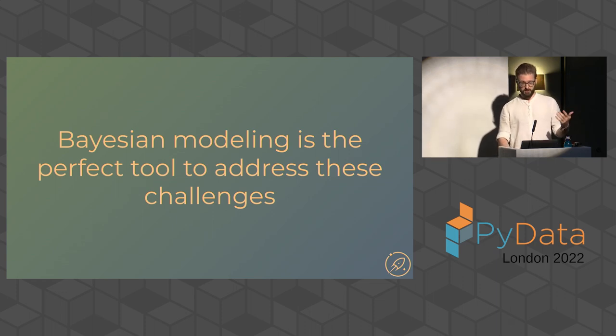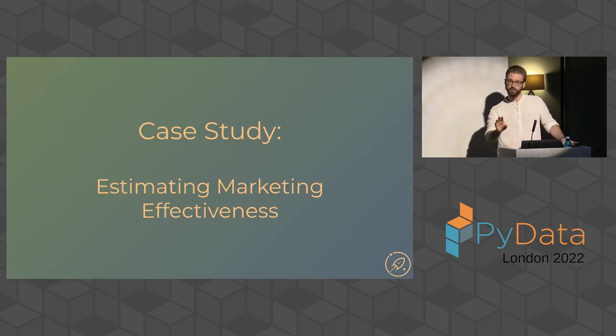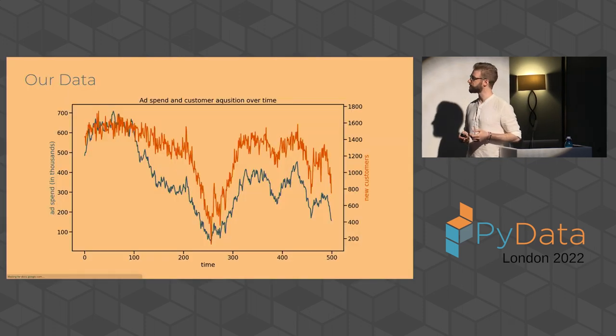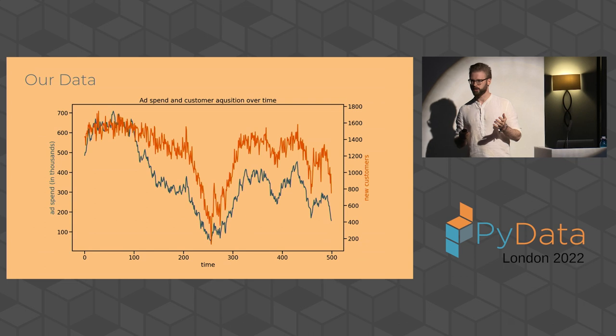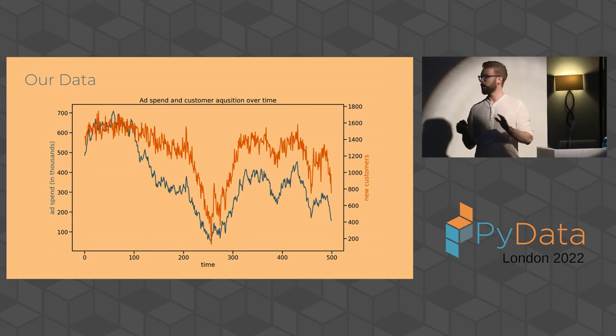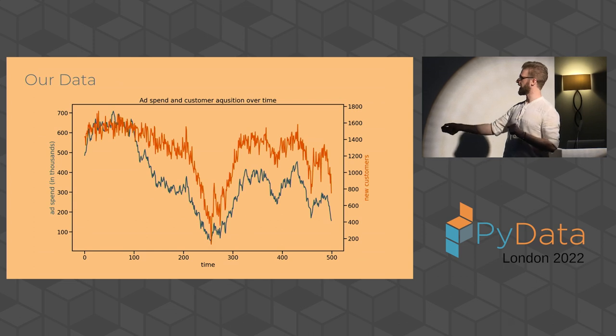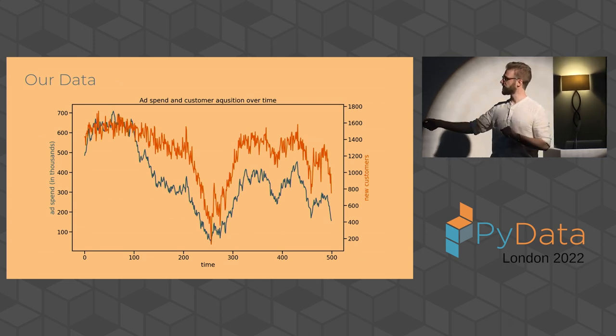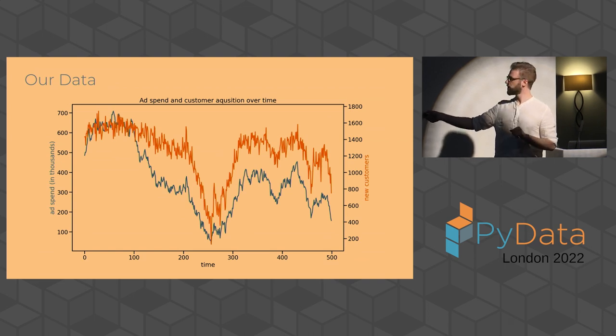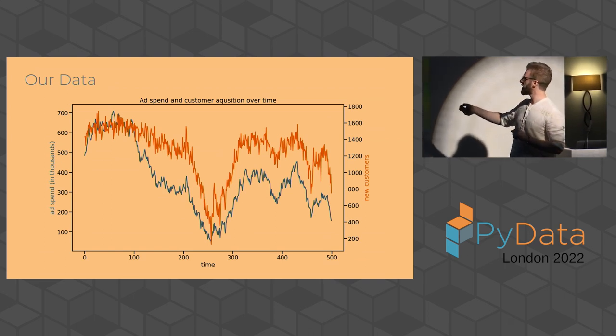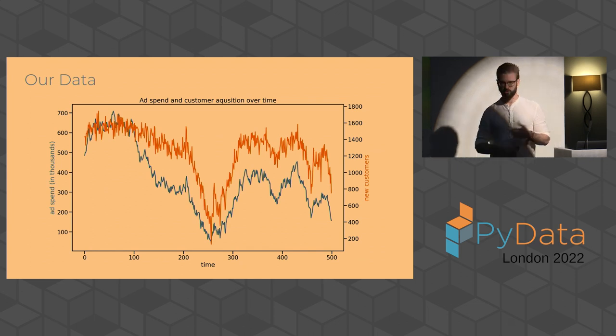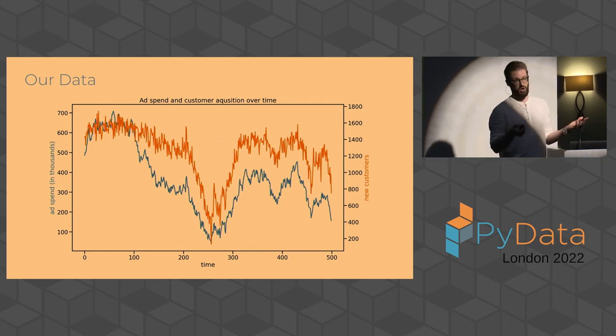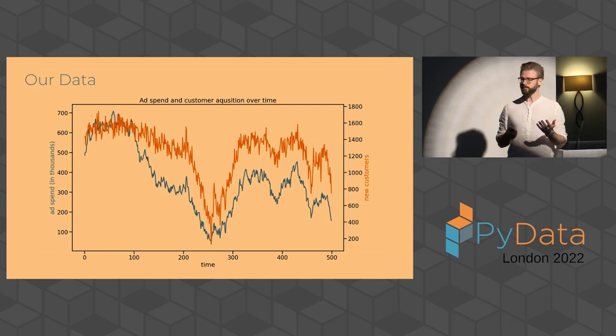And then the third one is in-house. So it makes sense that they're adopting open source tools like PyMC. So the thesis that I'm going to put forward is that Bayesian modelling is the perfect tool to address these and more challenges. And we're going to look at probably the prime example of marketing, which is estimating marketing effectiveness. So how effective are my marketing channels? And towards this, we're going to use just very, very simple simulated data, where over time now I have two time series. I have how much I spend in thousands of dollars and how many new customers I got.